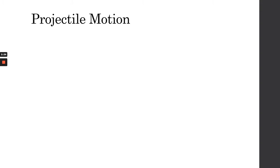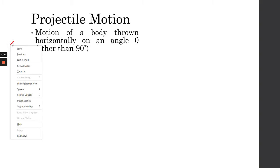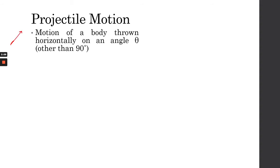Let's begin by understanding what projectile motion is. Projectile motion is basically the motion of a body thrown horizontally or at an angle other than 90 degrees. So we throw an object — could be a stone or anything like that — horizontally or at a certain angle above the horizontal. This dotted line is our horizontal, and at a certain angle we throw something. That is what we call projectile motion.